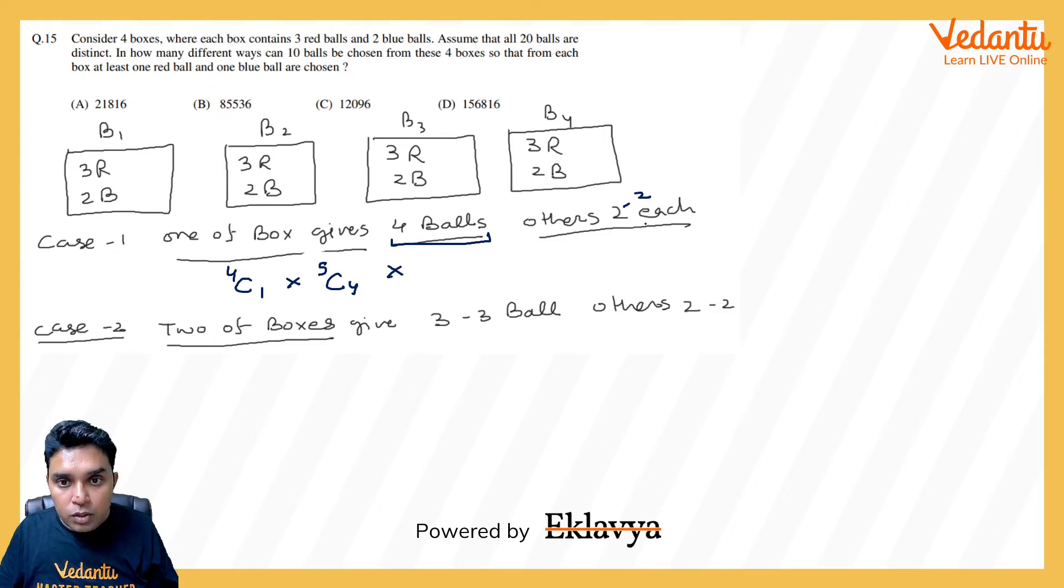And then other 2, 2 each, I think that will be done. Here, 3C1 into 2C1 whole power 3. So this becomes, you can check, 4C1, 4 into 5, 20 into 6 cube.